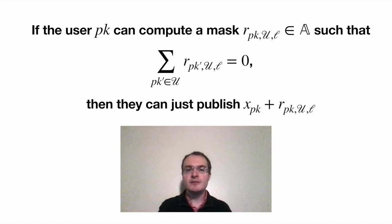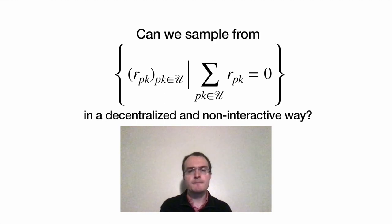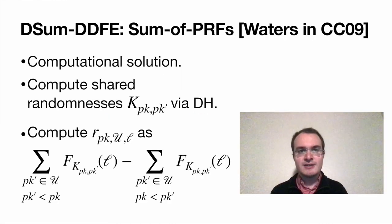So, how can we build a DDFE scheme for the DSum functionality? Here's a good starting point. If each party were able to compute a mask, such that the masks taken together cancel out, then we would have it mostly figured out, right? Because we can simply publish our element hidden by the mask, and given all of those ciphertexts, you would just add them up, and you would immediately recover the sum of the plaintexts. But can we actually do that? Can all of those participants sample a mask that is not uniformly random, but belonging to this structured distribution, without relying on a trusted third party, without coordinating, and without communicating?